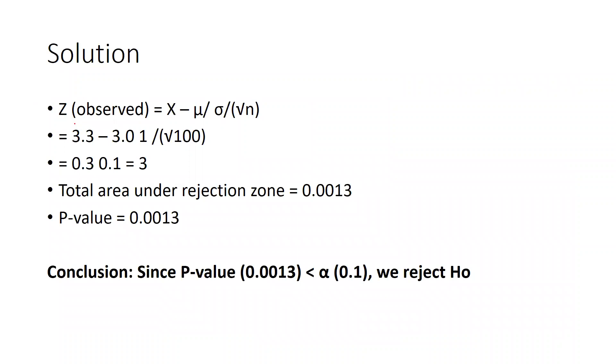You can see this is the formula of z calculation. We will put all the values. This is x̄, this is under root n. So x̄ is 3.3, μ is 3.0 divided by 1.